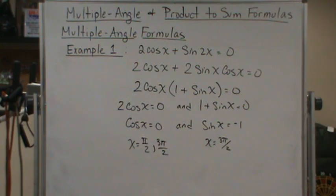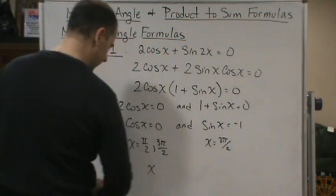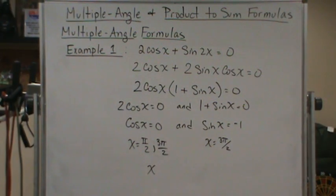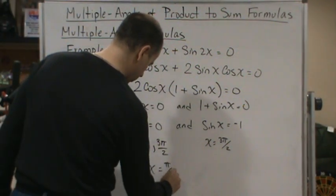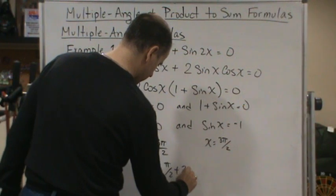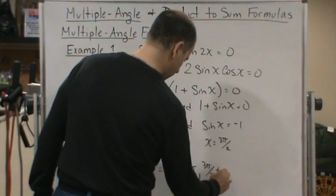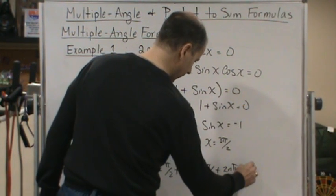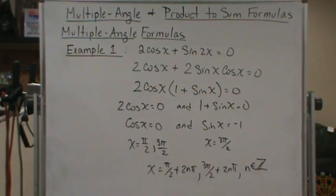So there's a little bit of redundancy, which is fine. So that means the general solution is just going to be equal to pi over 2 plus 2n pi and 3 pi over 2 plus 2n pi, where n is an integer. All right, have a great day.